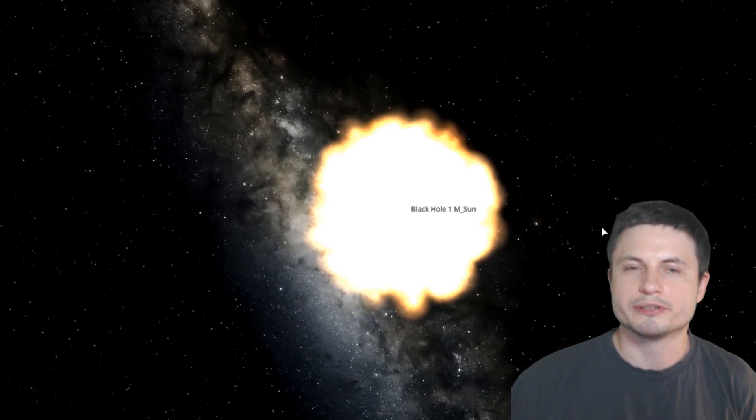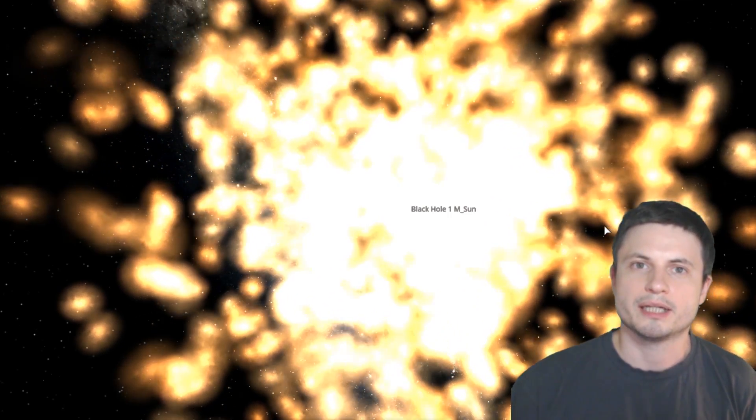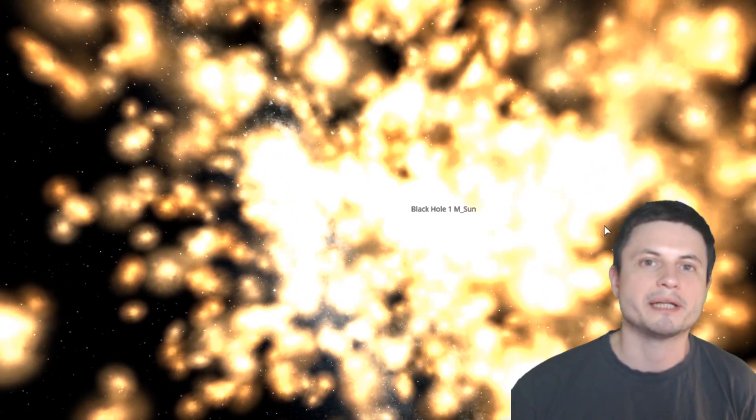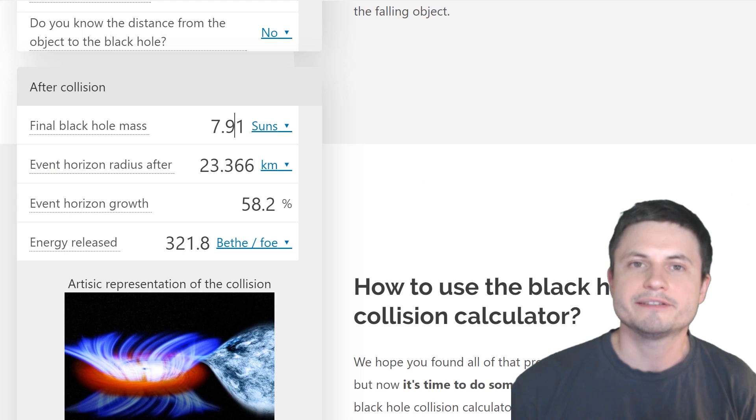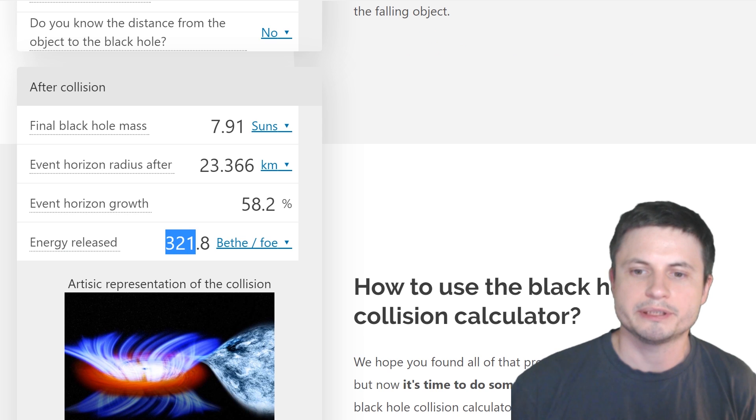In reality though, it would look something like this. There would be a very, very powerful, very large explosion, essentially equivalent to a tremendously powerful supernova. And in this case, from three masses of the sun, the amount of energy released is equivalent to 322 bethe foe, which is a unit used for really large amounts of energy.